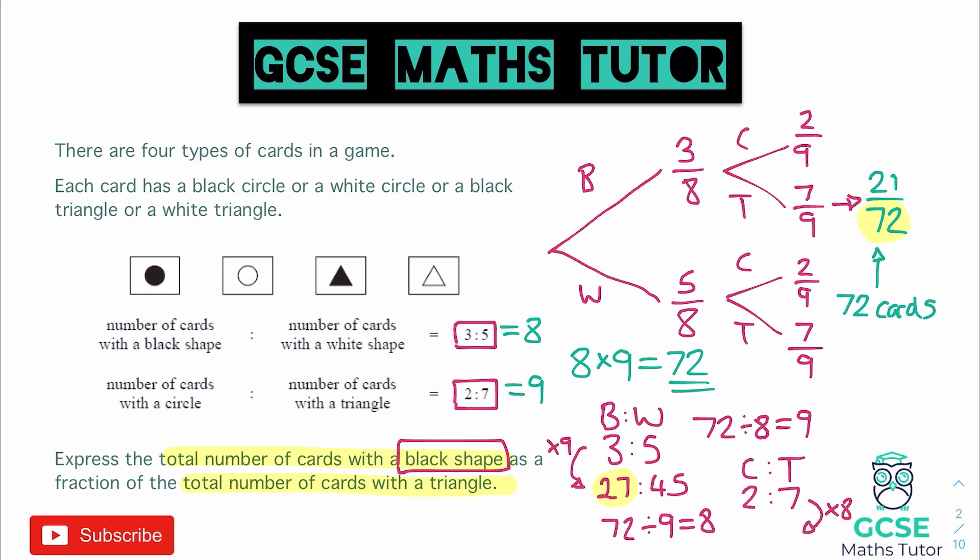And then we would multiply both of those by eight, just like we would when we're sharing in a ratio. So two times eight is 16, seven times eight is 56. So the number there that relates to triangles, which is what we're looking for, the number of cards that are a triangle, as stated in the question, is the 56. So there's 16 circles and 56 triangles.